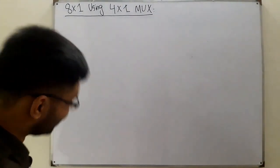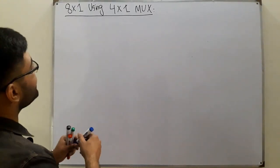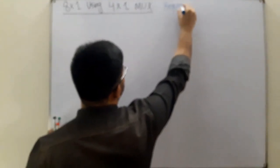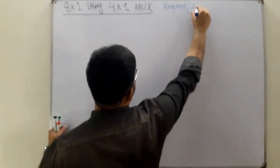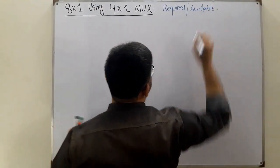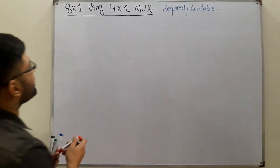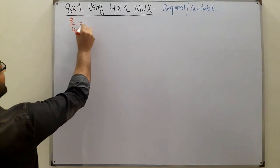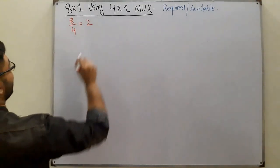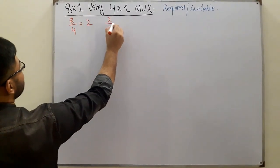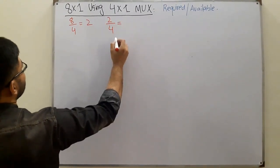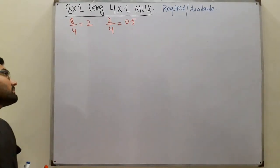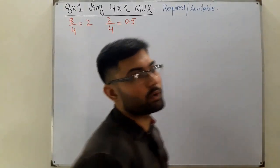Back to the basics: the method is required divided by available, and you continue until you get a one. In this case the required is eight and the available is four, so you get two. Now be careful — you take this two and divide it again by four to get 0.5. This is the tricky part.